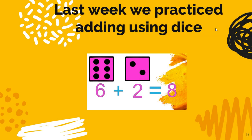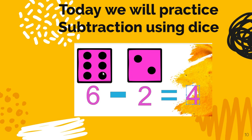So last week, we practiced adding using dice. And today, we're going to practice subtracting using dice. But it's a little bit different because remember, when you add using dice, you count all the dots that you have. But when you subtract using dice, you cannot do that.